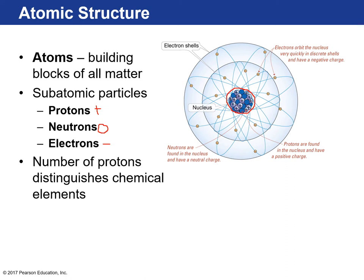The number of protons in any atom distinguishes that chemical element. For example, carbon has six protons — any atom with six protons must be carbon. If you add one proton, you have a whole new element: nitrogen, which has seven protons.